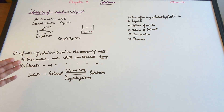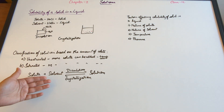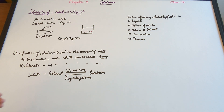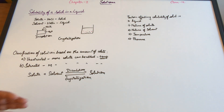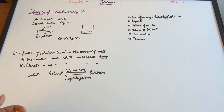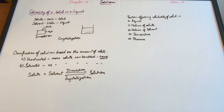In an unsaturated solution there is still more room for dissolution to take place at that particular temperature. So in a saturated solution you can no longer add more solute to the solvent, whereas in an unsaturated solution you can still add more solute at that particular temperature. Now, in the previous video we spoke about four factors that affect solubility: the nature of the solute, the nature of the solvent, temperature, and pressure — and we are going to discuss all of those with respect to the solid-in-liquid solution.